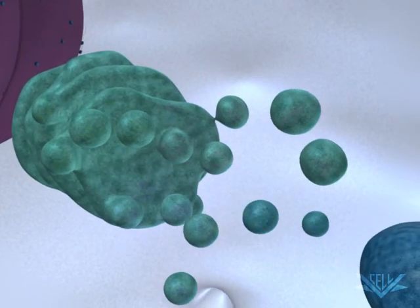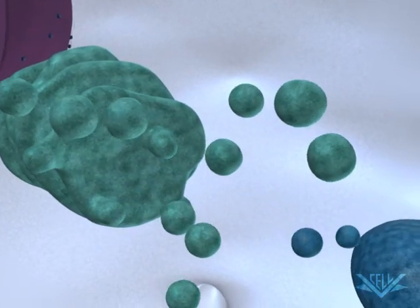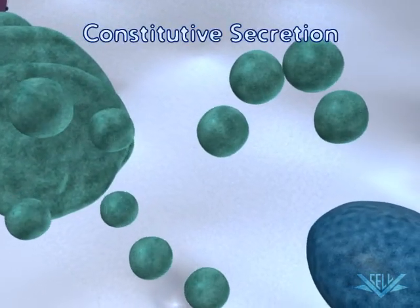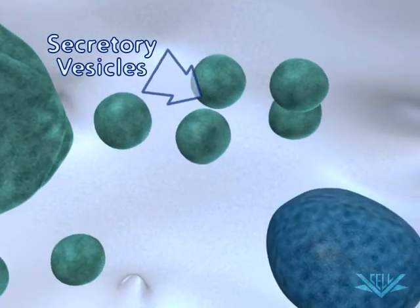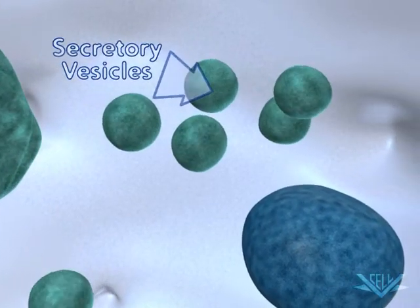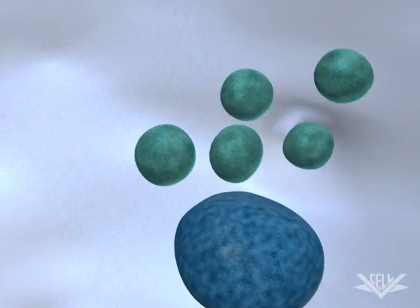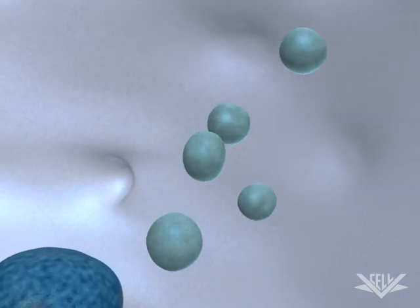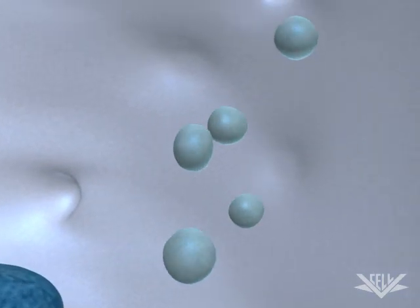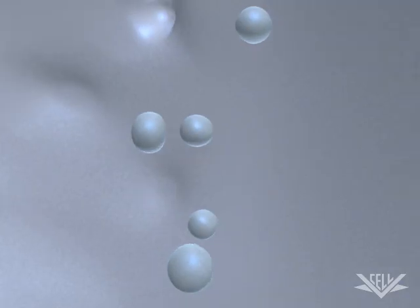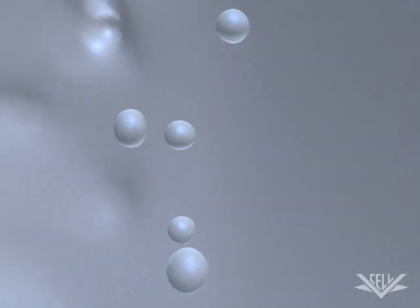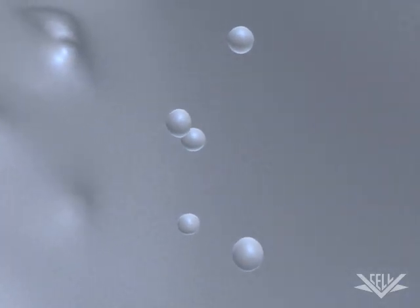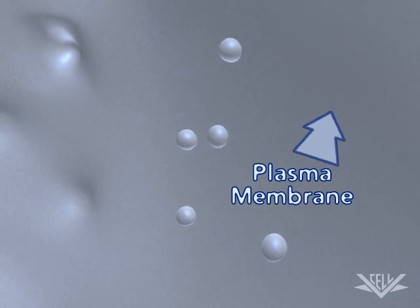Because there is no control over their secretion, this process is called constitutive secretion. Once the secretory vesicle reaches the cell membrane, it fuses immediately with the surface membrane and releases its cargo protein into the extracellular space. The secretory vesicle itself contributes new lipids and its membrane to the plasma membrane of the cell.